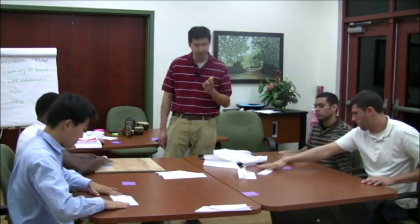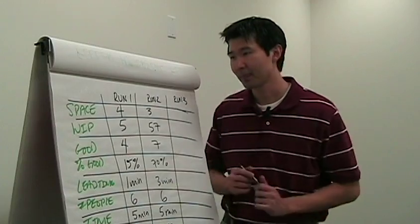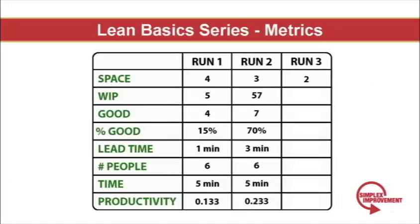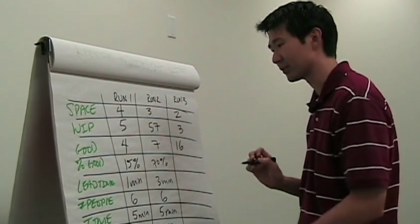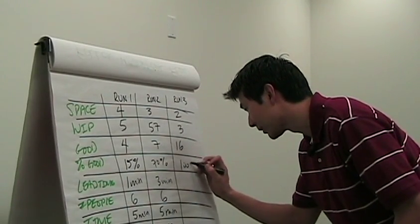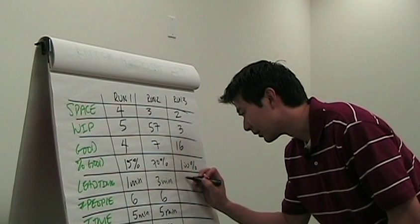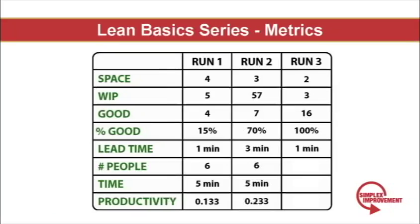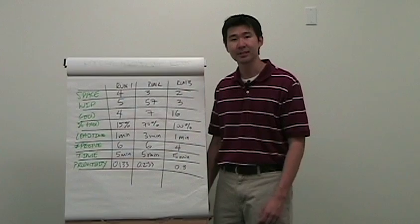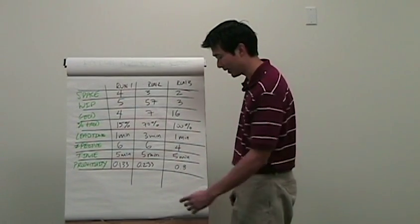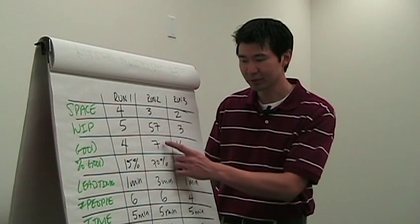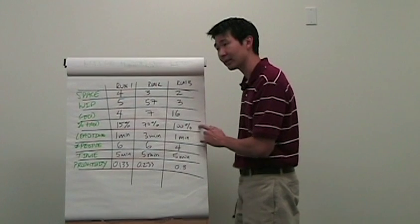The x-plane actually made it through the system in just under one minute. Let's review our metrics for the third run: as far as space goes, they only used two tables because they were much more compact. Work in process was only three, controlled by the Kanban between each station. They produced 16 good planes — nearly double what they produced using mass production — and 100% of the planes were good because of quality at the source. Lead time was a predictable one minute. Number of people in the system: four. They ran for five minutes and their productivity — good parts divided by people divided by time — was 0.8. Even though they were working at a slower pace, by pulling and pacing they were actually able to more than triple their productivity and more than double their good planes, with impeccable 100% quality.